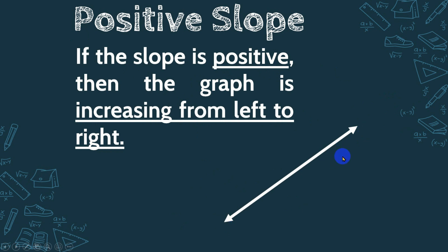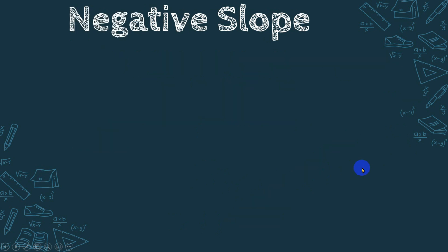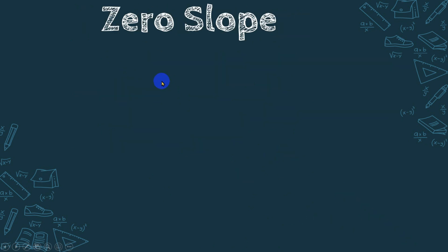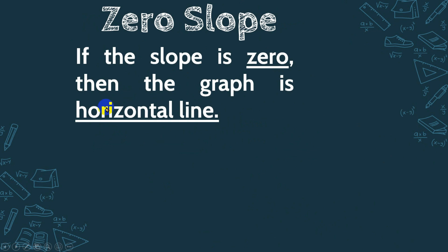Negative slope: if the graph is decreasing from left to right or downward from left to right. Zero slope: if it's a horizontal line, like the x-axis, automatically the slope is zero.